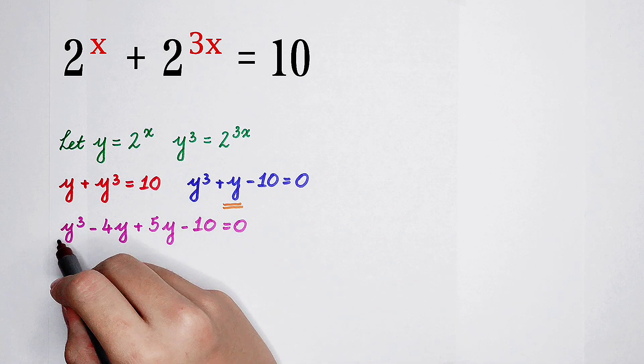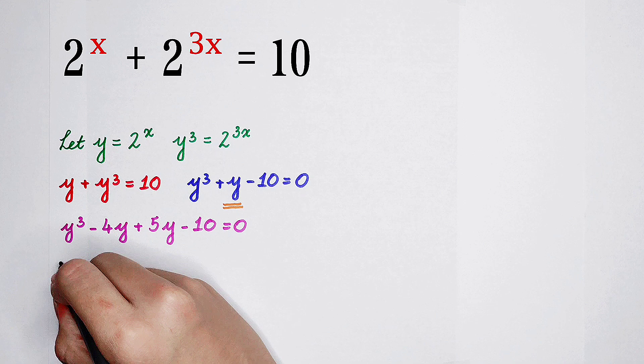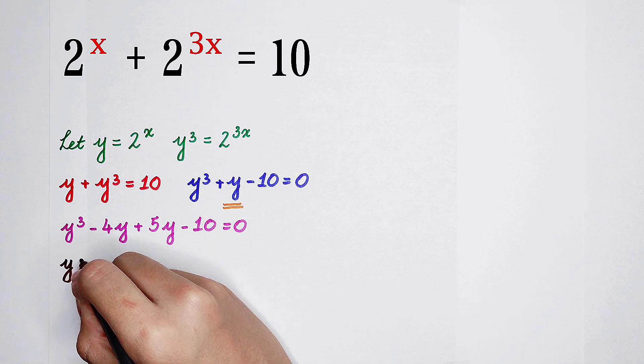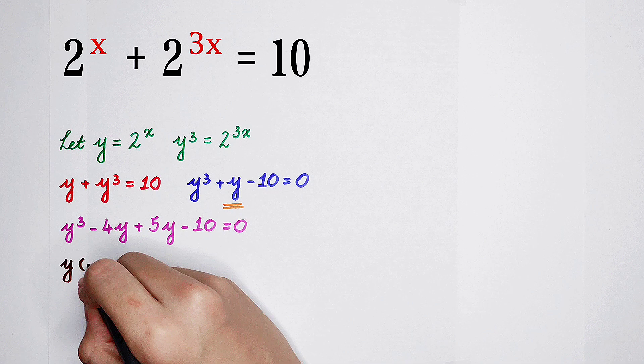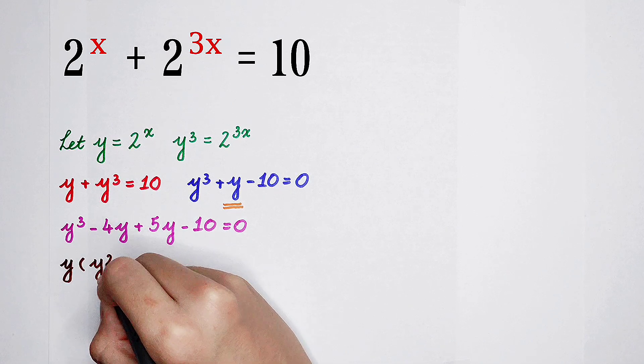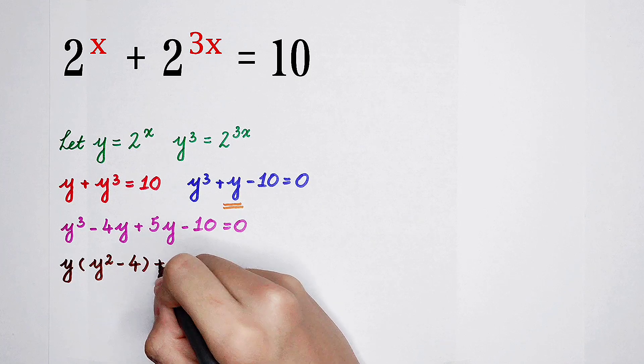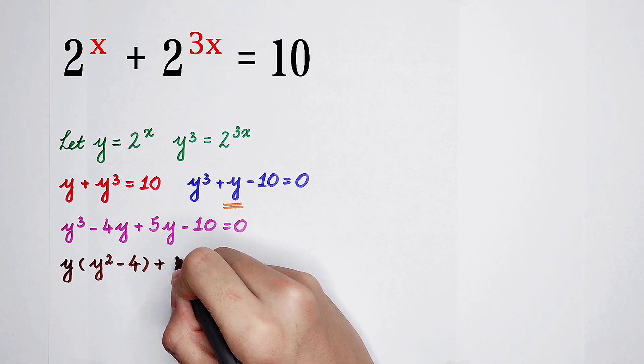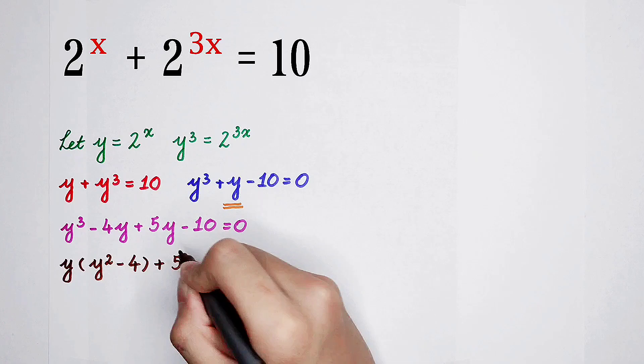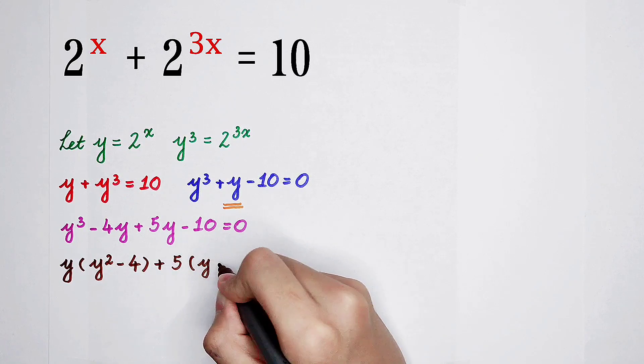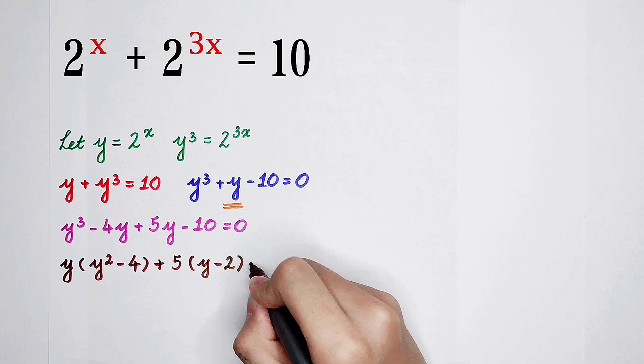And then, y to the power 3, minus 4y. We take out y from these two terms. And y to the power 2, minus 4, left in the bracket. And then plus, we take out a 5 from these two terms, and it left y minus 2 in the bracket.